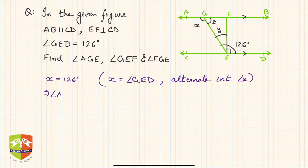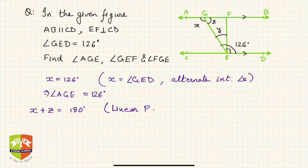Now clearly you can find Z. If you see, X plus Z is 180 degrees. Why? The reason is a linear pair. So Z, which is equal to angle FGE...